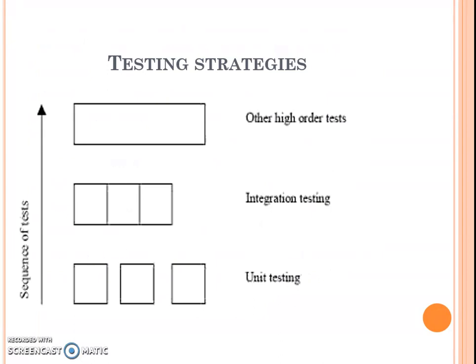Now let us look at a few of the testing strategies. Once it is decided who will do the testing, the main issue is how to go about testing — that is, in which manner testing should be performed. As shown in the figure, first unit testing is performed. Unit testing focuses on the individual modules of the product. After that, integration testing is performed. When modules are integrated into a bigger program structure, new errors arise often, and integration testing uncovers those errors. After integration testing, other higher-order tests like system tests are performed. These tests focus on the overall system.